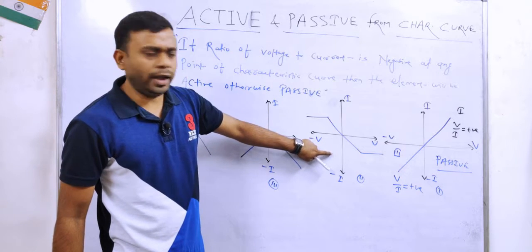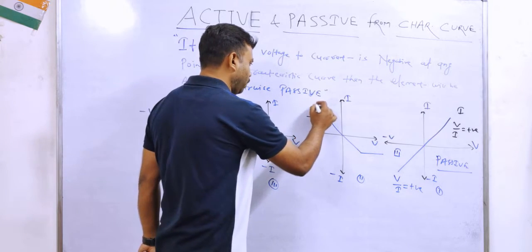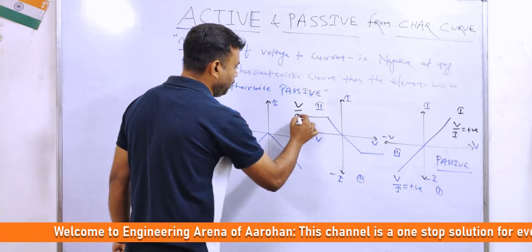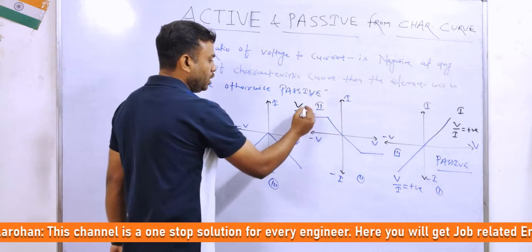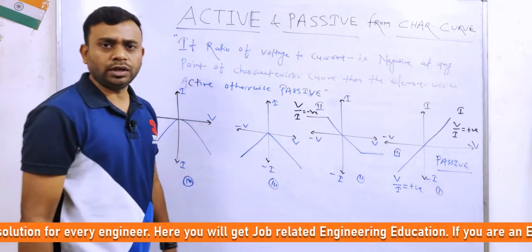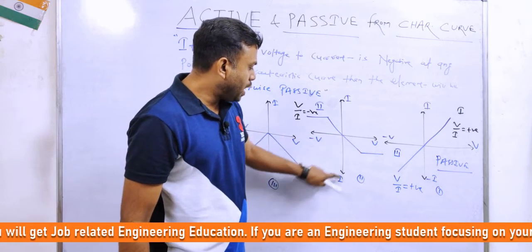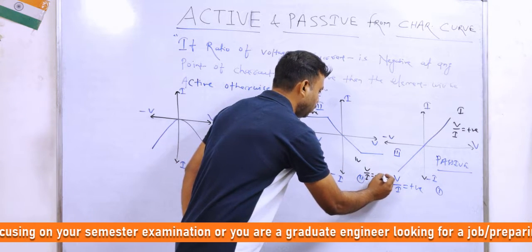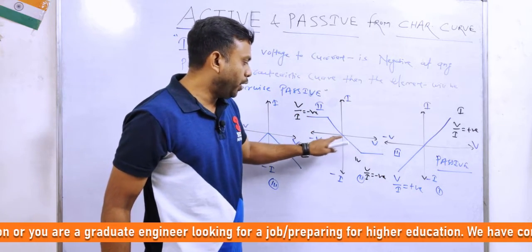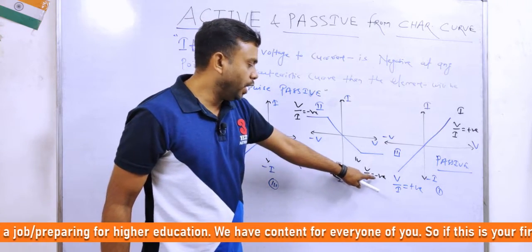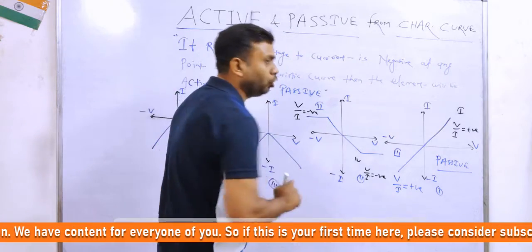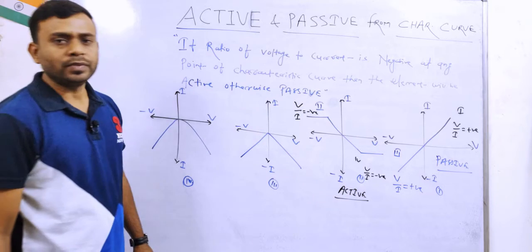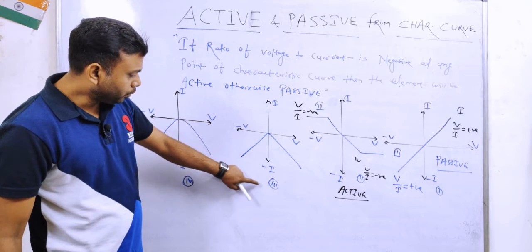Second curve देखते हैं। इस curve का एक half portion draw हुआ है second quadrant में। यहाँ पर V negative है और I positive है, तो V by I ratio negative होगा। और इस curve का दूसरा part आ रहा है fourth quadrant में, जहाँ भी V by I ratio negative होगा। मतलब इस characteristic curve के हर point पर V by I ratio negative मिल रहा है — इसलिए this is the curve for an active element.